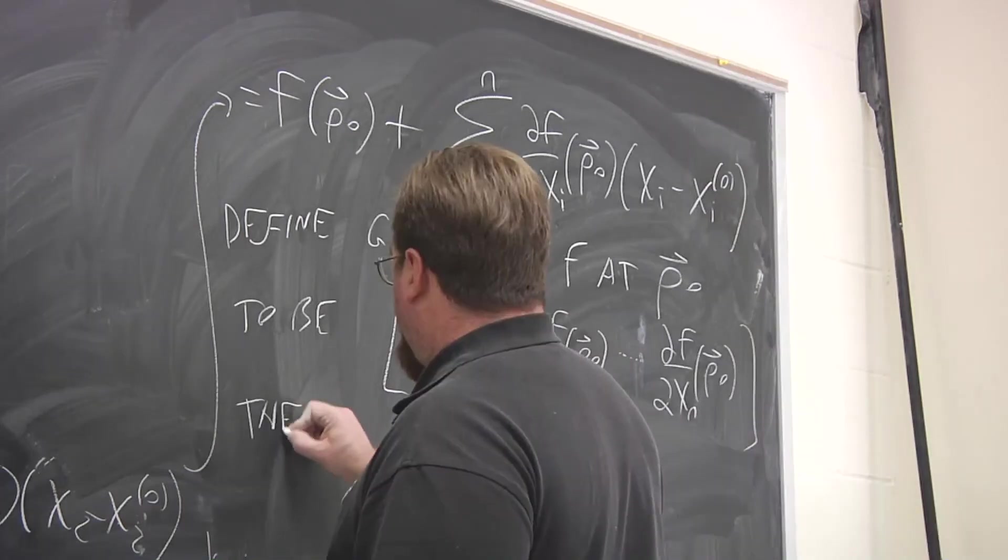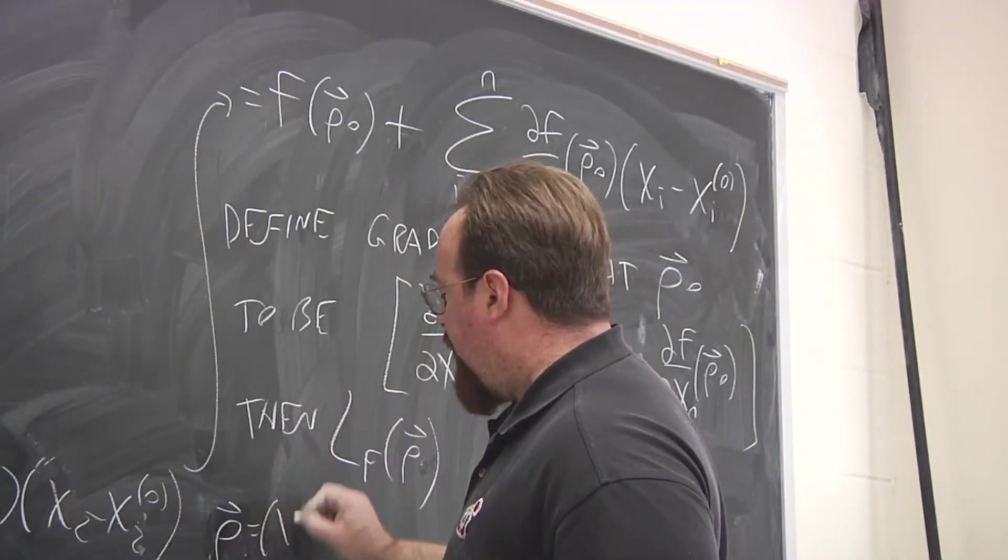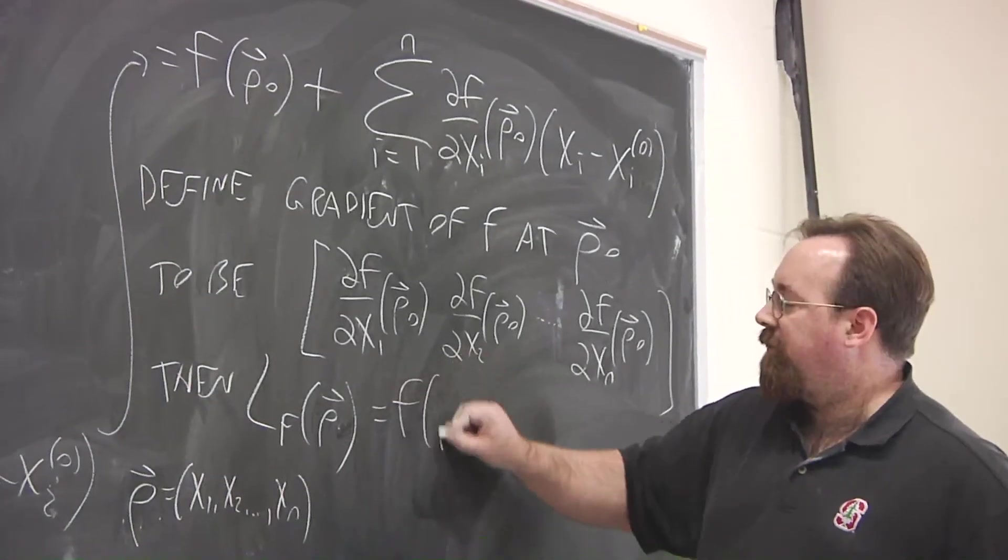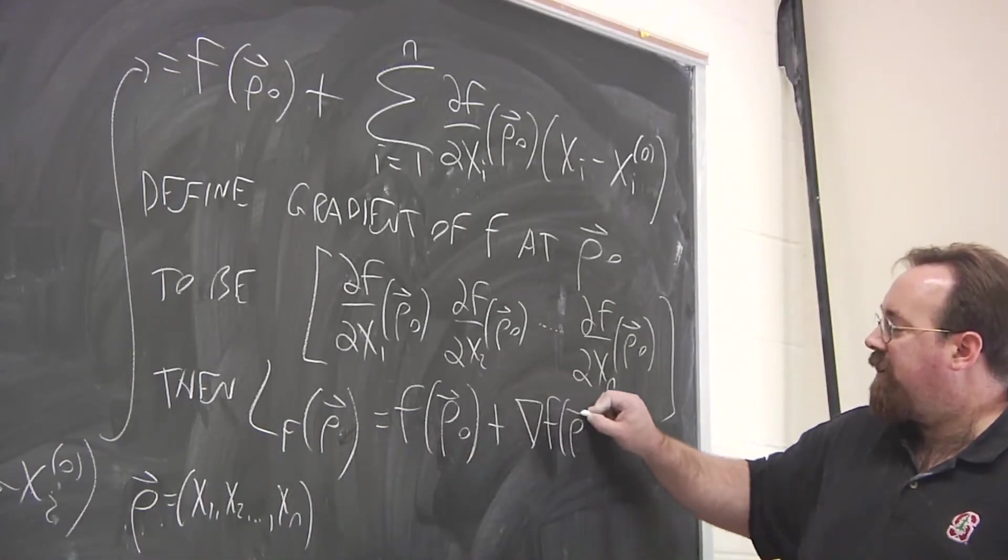So then if we write it this way, we have a simpler way of writing the linearization. So if I let p, this vector p be any point in n-dimensional space, then the linearization around p is going to be, as usual, a function evaluated at p naught, plus we take the gradient of f at p naught,